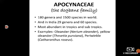Apocynaceae is also called the Dog Bane family. It has about 180 genera and 1500 species, distributed in the warmer parts of the world. However, some species are also found in temperate climates. In India, there are 29 genera and 60 species, found in the Eastern Himalaya and Southern Peninsular India.